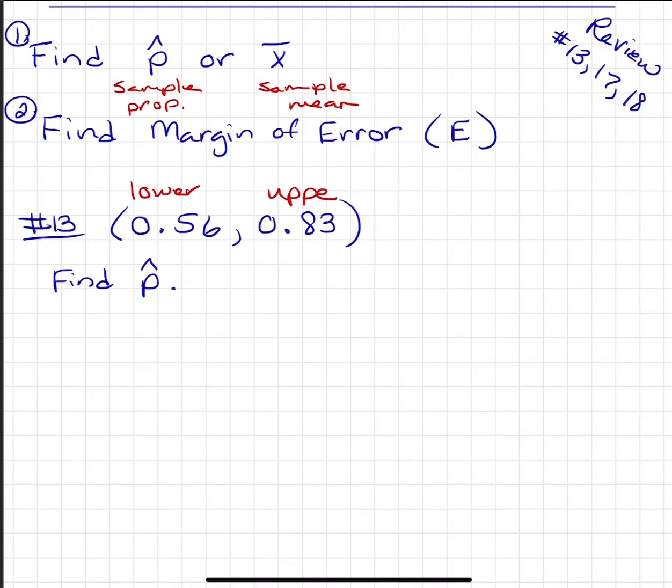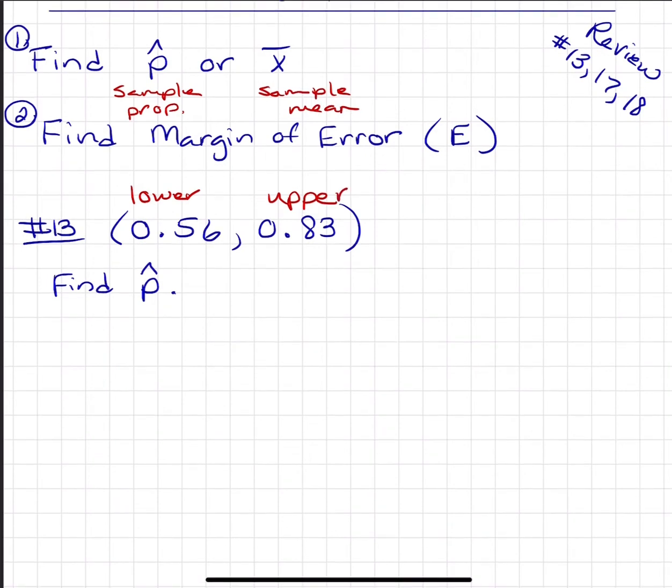Whether you're finding P hat or X bar, the concept works the same. If you think about this as a number line where you have your interval, your lower bound on one side and the upper bound on the other.